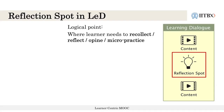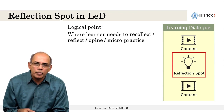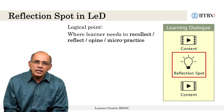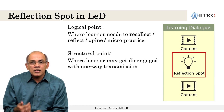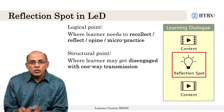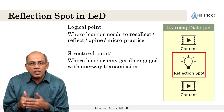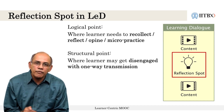This is called the reflection spot. The reflection spot in an LED is a logical point where we provide the learner with opportunities for micro practice — to assimilate what they have just learned, as well as to express their opinion or interact with the content in some way. It is a structural point where learners may get disengaged, so at any point when we feel the learner is likely to disengage, that is a good spot to introduce a reflection spot.